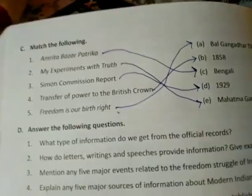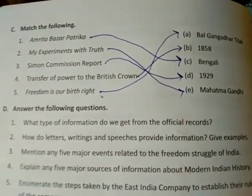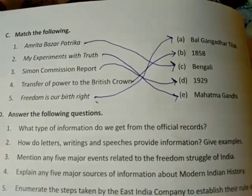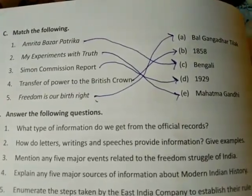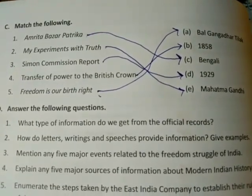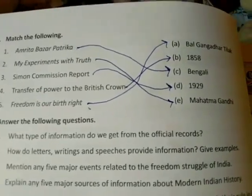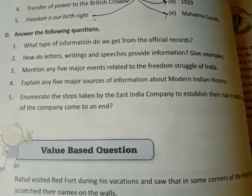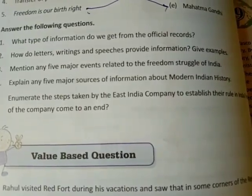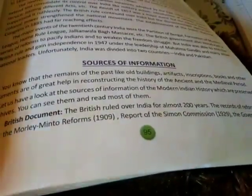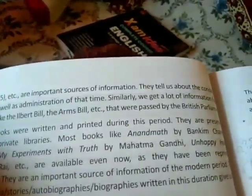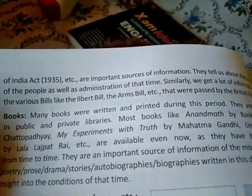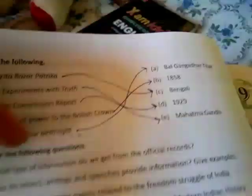Fill in the blanks: land revenue settlements are an important source of information. Collection of Gandhiji's writings has been preserved and displayed at Gandhi Smriti. The Indian National Congress was established in 1885. The revolt of 1857 was ruthlessly suppressed by the colonial power. The Morley-Minto reforms were introduced in 1909. Match the following: Amrit Bazar Patrika — Bengali; 'My Experiments with Truth' — Mahatma Gandhi; Simon Commission report — 1929; transfer of power to the British Crown — 1858; 'Freedom is our birthright' — Bal Gangadhar Tilak.